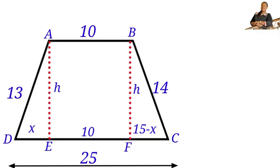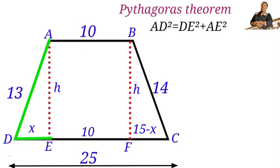To find h, we apply Pythagoras' theorem to the two right-angle triangles. Pythagoras' theorem states that the square of the hypotenuse equals the sum of the squares of the other two sides. In triangle ADE: AD² = DE² + AE², so 13² = x² + h². Let us call this equation 1.